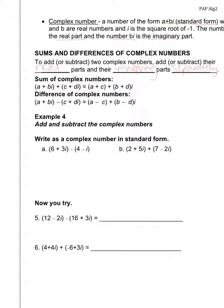For the sum, you add real parts a plus c, then add imaginary parts b plus d. For the difference, you subtract the real parts — a minus c — and subtract the imaginary parts — b minus d.